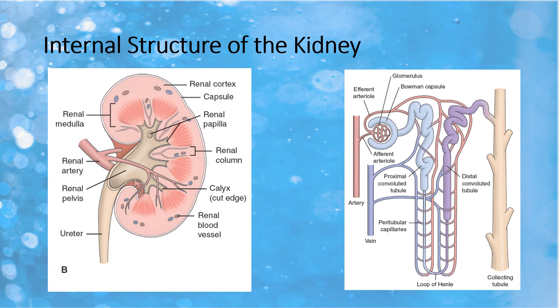The nice thing about the kidneys is that because there are so many nephrons, the kidneys can handle having about 80% of the nephrons damaged before we have to start artificially filtering the blood. As we age, the nephrons do die — about 30 to 50% of them die by the time we're 70 years old. So we want to make sure we preserve as many nephrons as we can by watching kidney function studies when we give patients medications that could damage their kidneys.